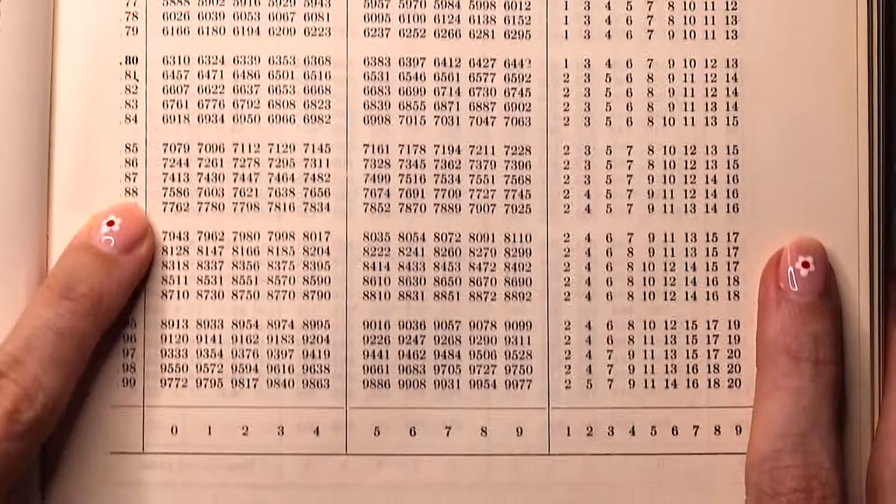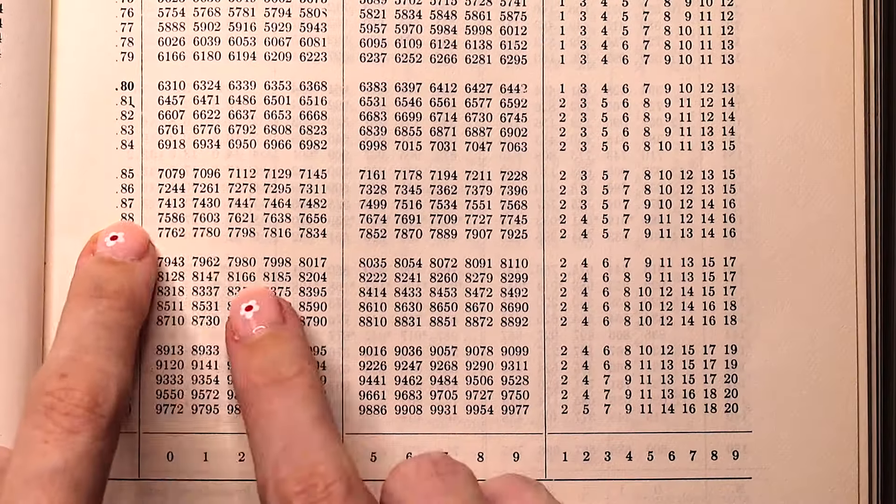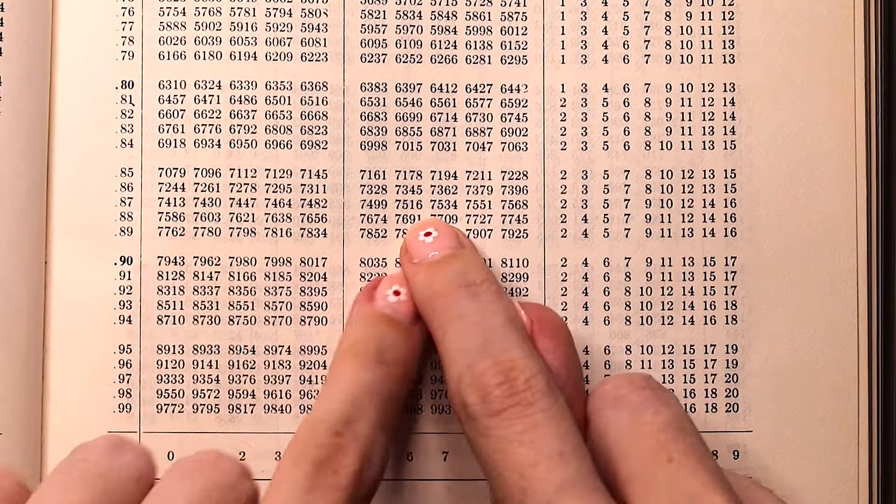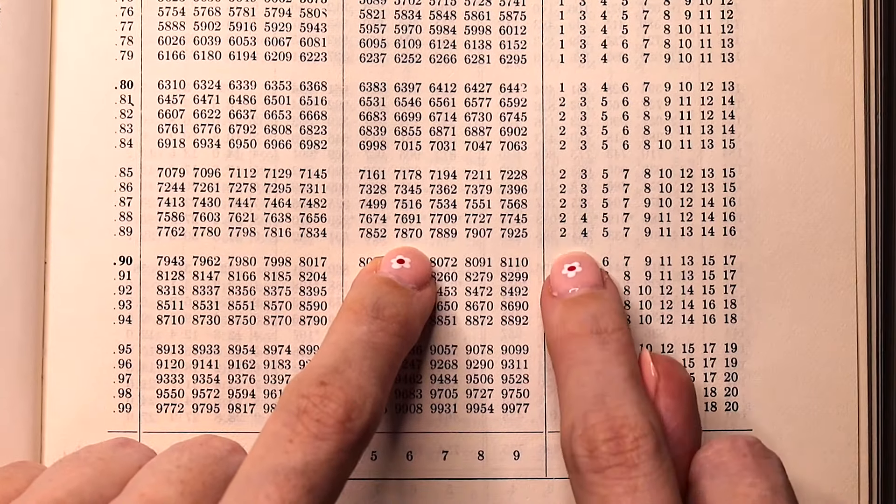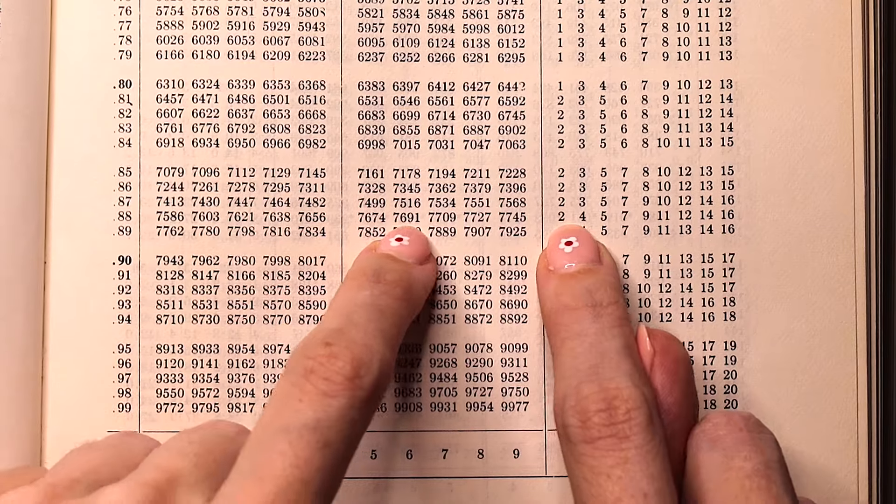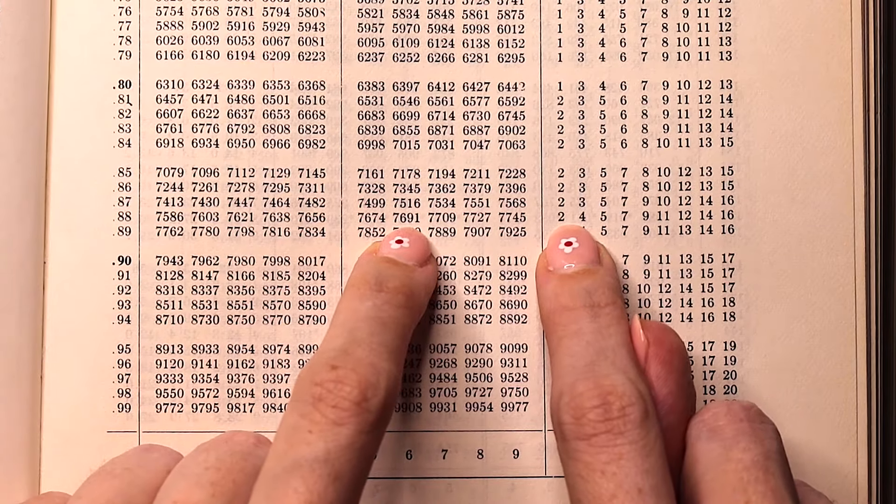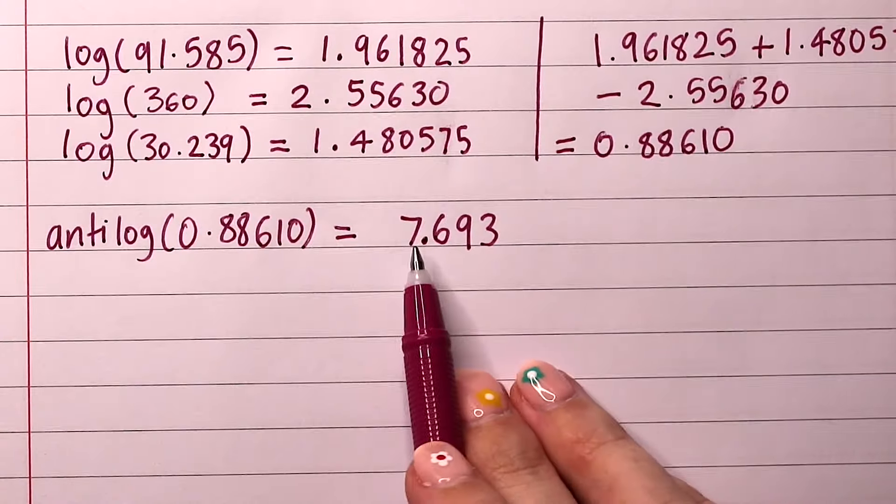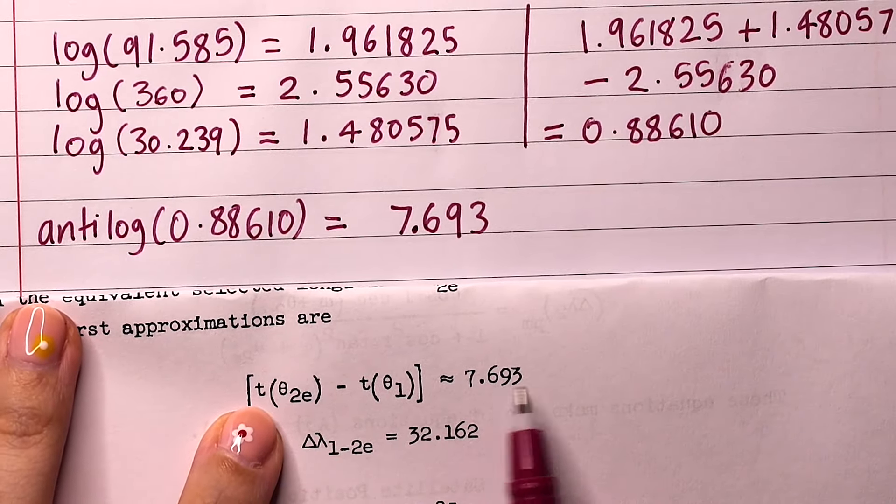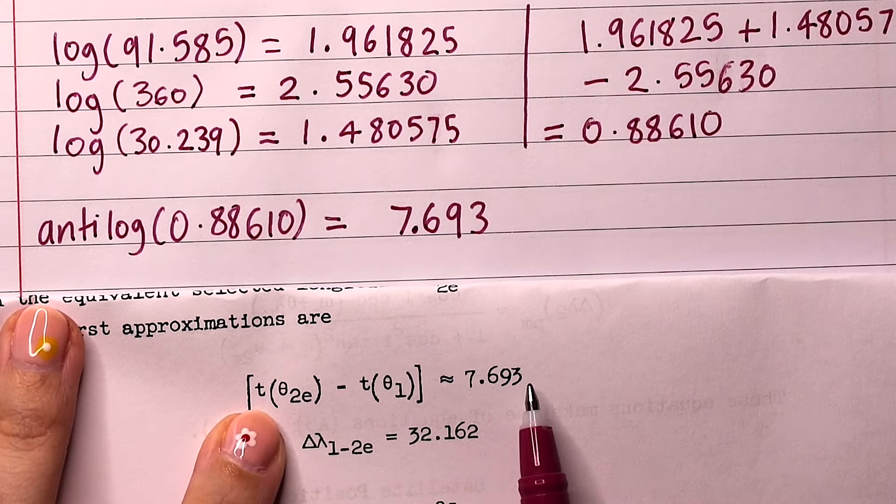We are looking for 0.88610. 0.8861. That will be 7691 plus 2, which is 7693. Our decimal point will be placed between the 7 and the 6 to give us exactly the same answer that Katherine Johnson has recorded down here.